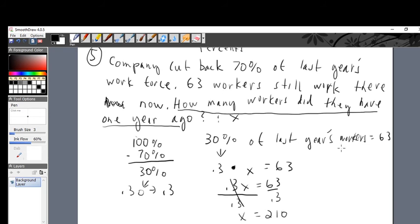That's how many workers last year. How many workers did they have last year? One year ago they had 210 workers. 70% got lopped off, that's how bad things were. That happens to be 147 workers. It's no joke, 147 workers lost their job and 63 are left in this company. That's how devastating things were.